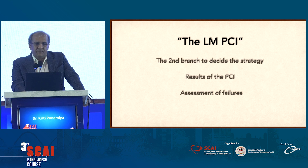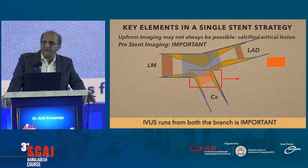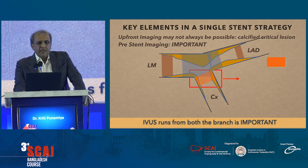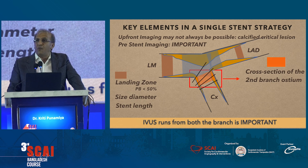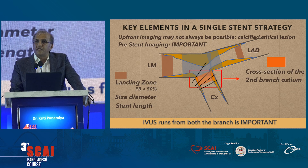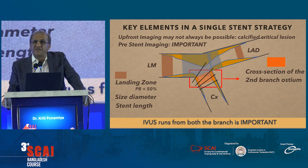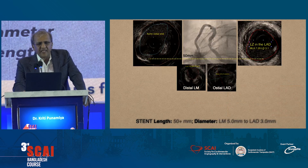The key elements in a single-stent strategy are shown in this cartoon, and this red box defines what is going to happen to the second step — whether it's going to happen or not. When you do an IVUS measurement of the circumflex artery, remember it is not possible to get a cross-sectional view because of the wall artifact — you will get oblique views. Therefore, when you want to size the circumflex artery, it is not best to size at the ostium. You need to go 3 to 4 millimeters into the circumflex and measure your reference vessel size, because this determines the final MSA you have to achieve. The IVUS runs in both branches are important. The second branch is far more important than the main branch.